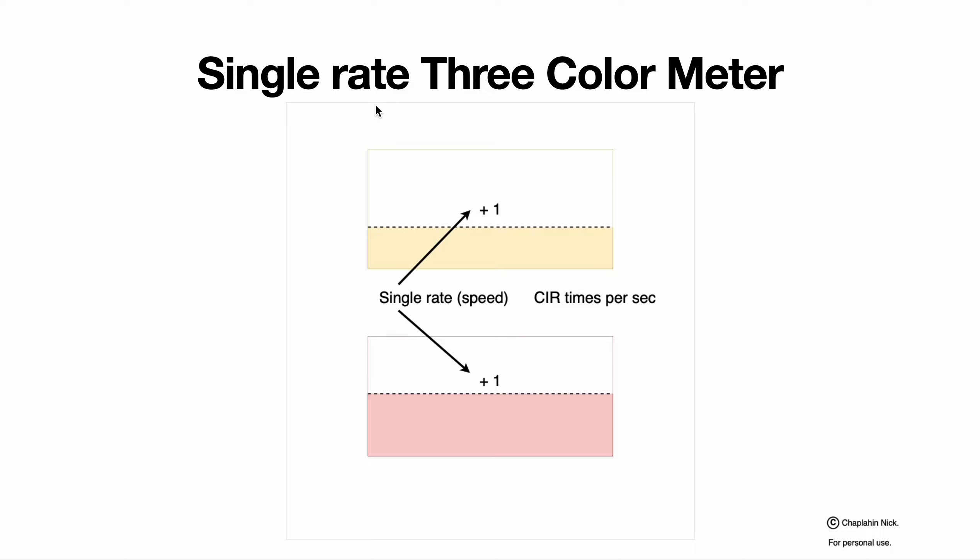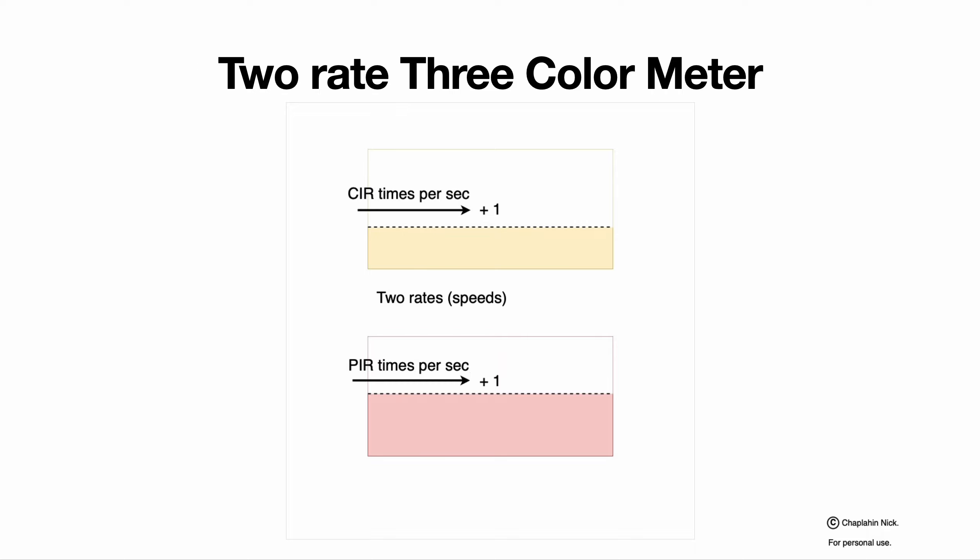This is single rate, three color meter. So they are incremented simultaneously. If we have individual rates for each threshold to be incremented, then for the yellow it will be CIR times per second, for the red it will be PIR times per second. This is two rate, three color meter.